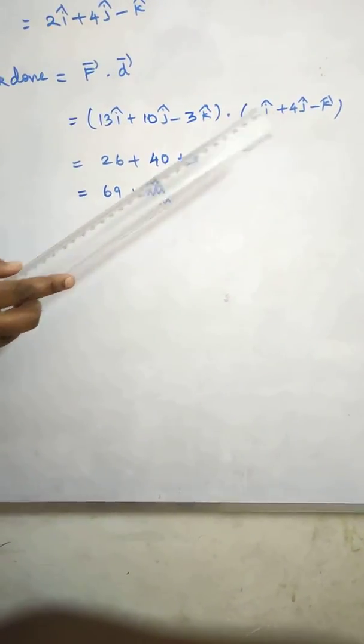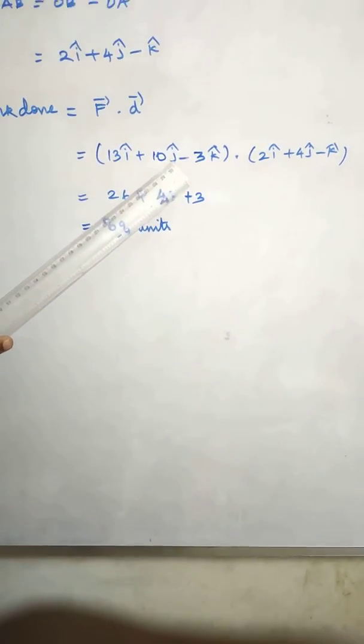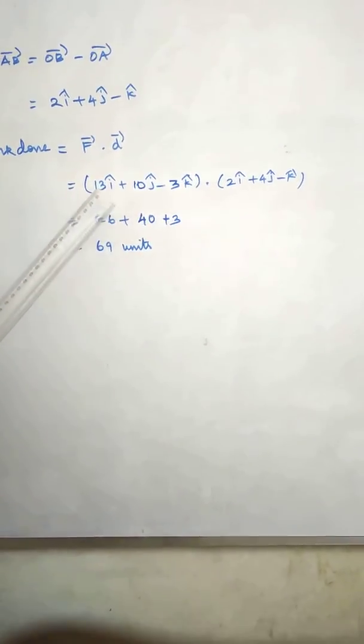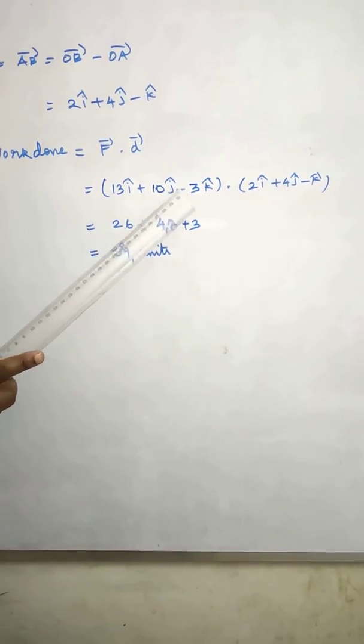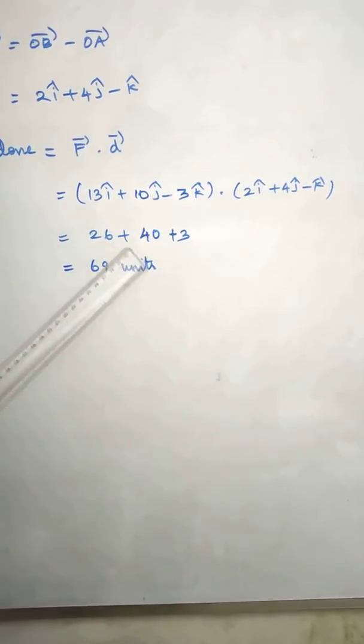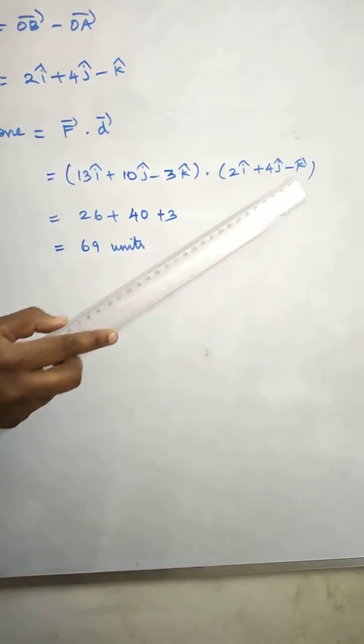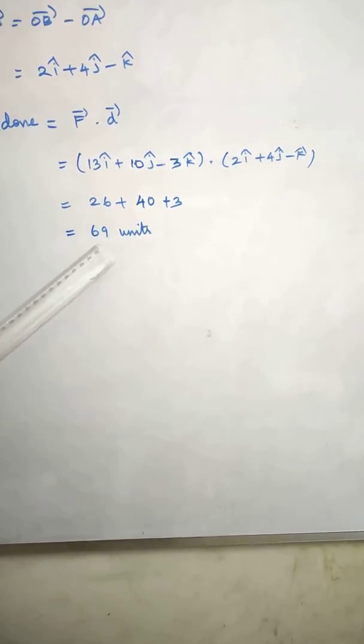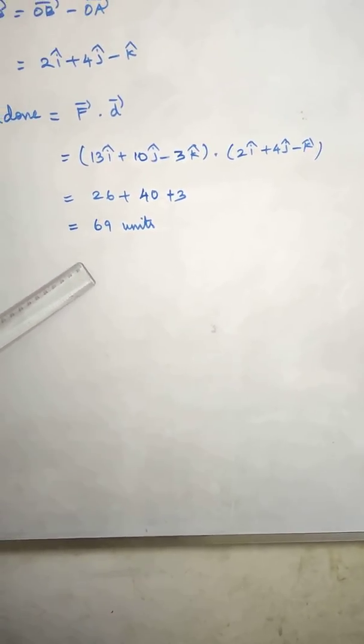We can take i dot i by 1, i dot j by 0, the same way j dot j is 1, so i dot i multiply, 13 into 2 is 26, then j dot j, 10 into 4 is 40, then minus 3 into minus 1 plus 3, so add 69 units.